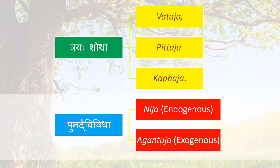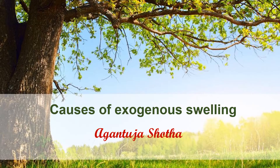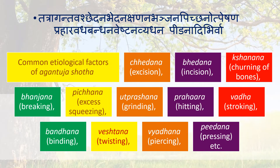So Shotha has three types: Vataja, Pittaja, and Kaphaja, and it can be further classified into Nija and Agantuja. Now the causes of Exogenous swelling — Agantuja Shotha.